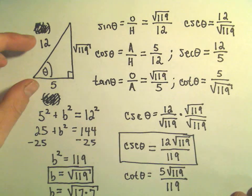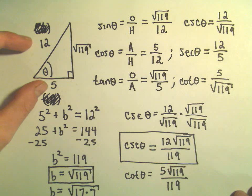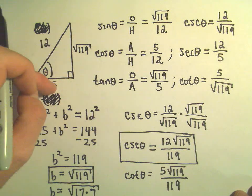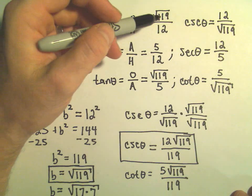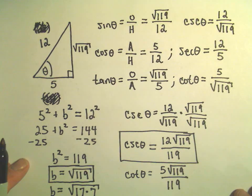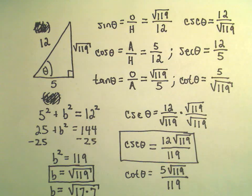But again, there's no guaranteeing that these original lengths were 5 and 12. But the idea is it doesn't really matter. As long as they're in that same proportion, all of these equivalent ratios will work out to be the exact same value.